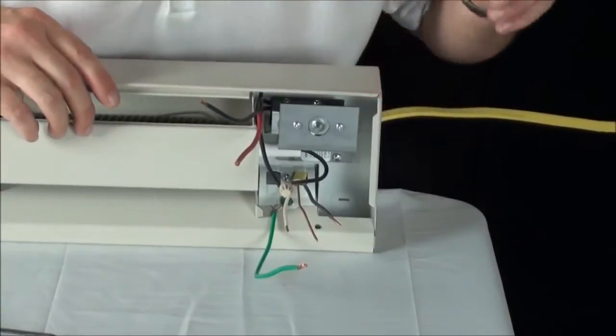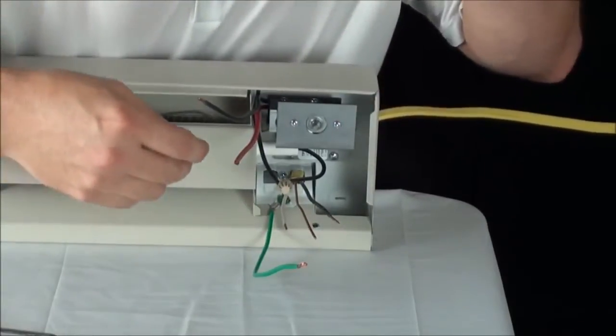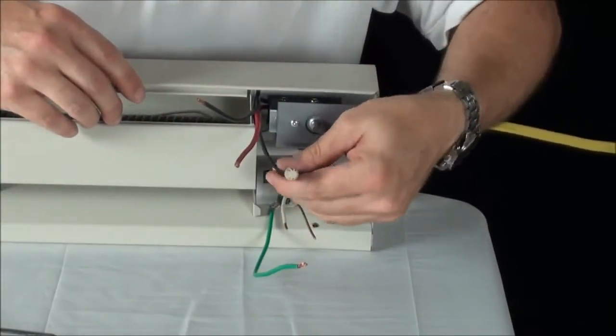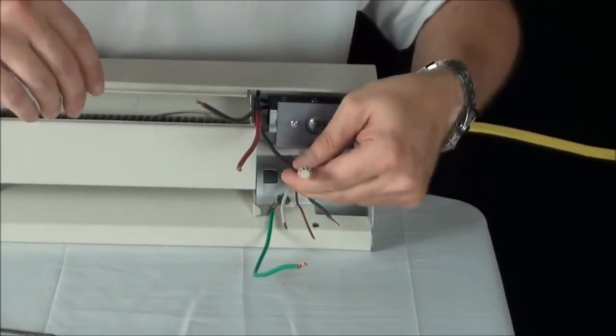Now, we're going to wire the thermostat after it's been installed. You will see that this thermostat can be installed on either end of the baseboard.